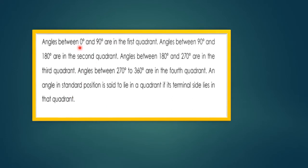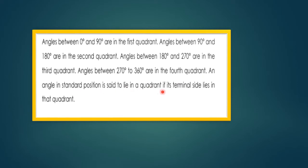Angles between 0° and 90° are in the first quadrant. Angles between 90° and 180° are in the second quadrant. Angles between 180° and 270° are in the third quadrant. Angles between 270° and 360° are in the fourth quadrant. An angle in standard position is said to lie in a quadrant if its terminal side lies in that quadrant.